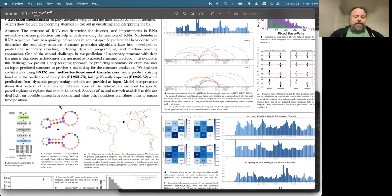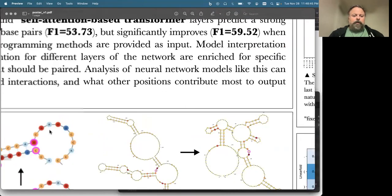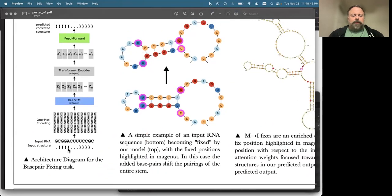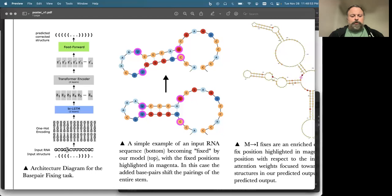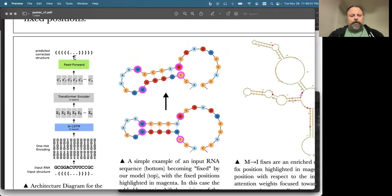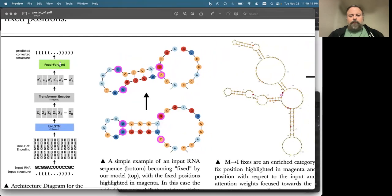The fixing task is basically the idea that our neural network takes in both the sequence and structure, the proposed structure from some output structure prediction program, does a one-hot encoding and uses a bidirectional LSTM rather than positional encoding to ultimately output a corrected or fixed secondary structure. This uses transformer encoder layers and a feedforward network.